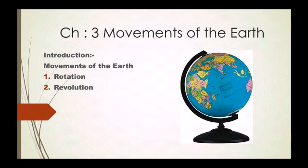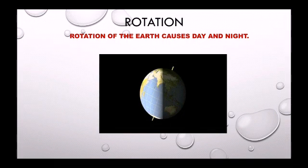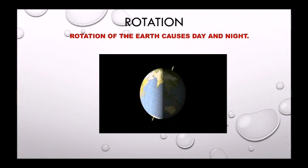Now we will study about the rotation of the Earth. Students, you have seen a spinning top — when you spin a top it rotates on its axis. What is the axis? We studied in the earlier chapter on latitudes and longitudes that the axis is an imaginary line passing from the North Pole to the South Pole, and it helps the Earth to spin on its place. Similarly, the Earth also rotates on its axis, and this movement is called rotation.